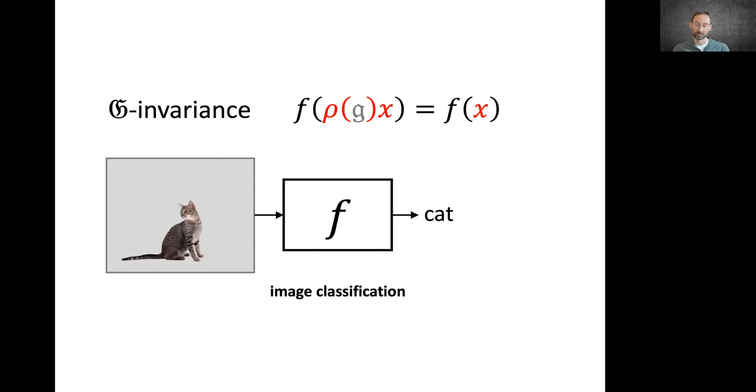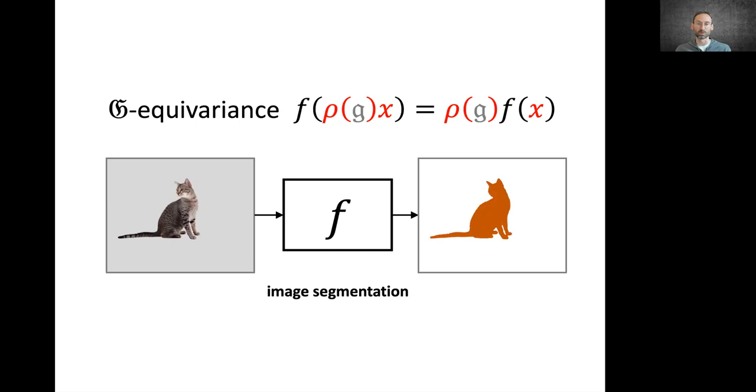On the other hand, we can have a case where the function has the same input and output structure. For example, in image segmentation, the output is a pixel-wise label mask. We want the output in this case to be transformed in the same way as the input, or what we call an equivariant function.